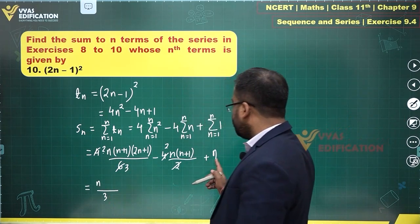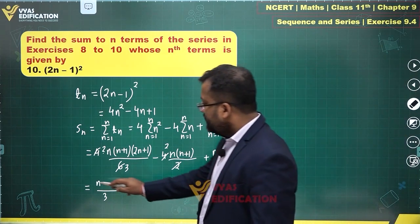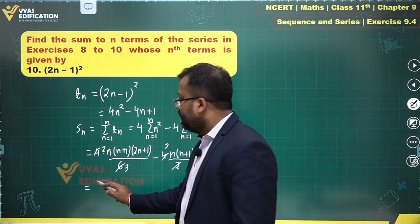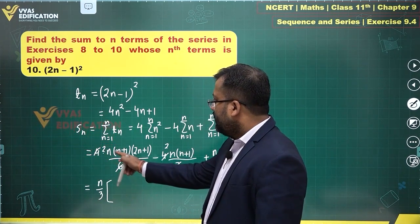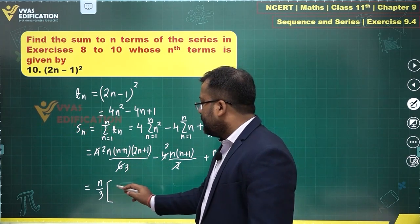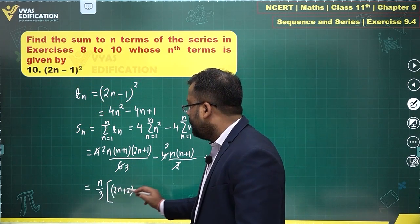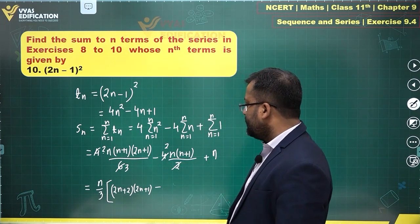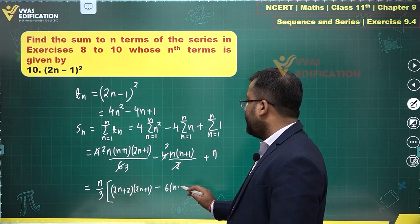So n/3 outside. In the bracket what do we get? 2(n+1)(2n+1) which is (2n+2)(2n+1), minus 6(n+1) because n/3 goes, so 6 times (n+1) remains.